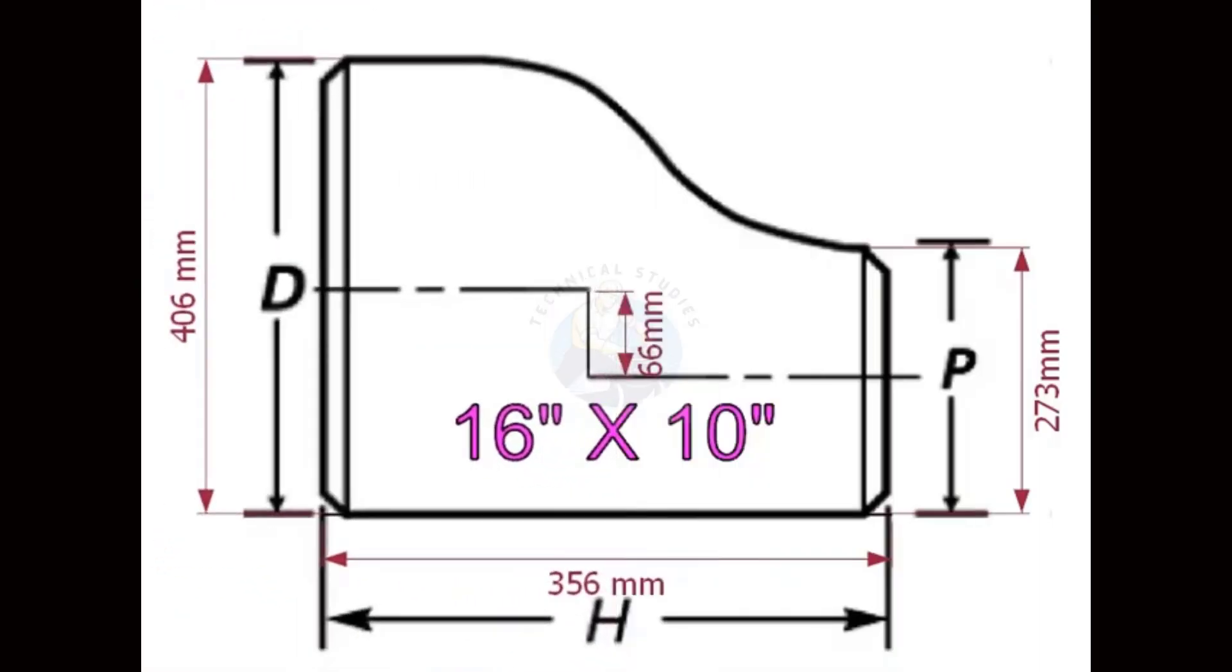An eccentric reducer is a fitting used in piping systems between two pipes of different diameters. The same fitting can be used in reverse as an eccentric increaser or expander.